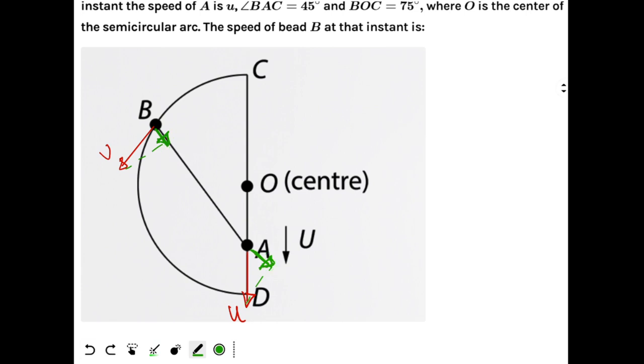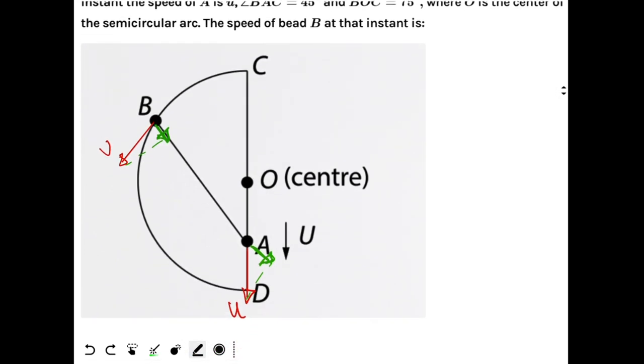Now how do we find the component? We need to know the angles. In the question, angle BAC is 45 degrees, which means this angle over here is also 45 degrees. So the component of U along the string will be U cos 45 degrees.